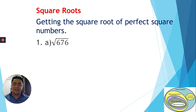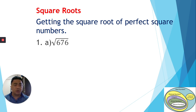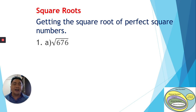Hello, good morning once again, my dear students. Today we're going to study about getting the square roots of perfect square numbers. What is a perfect square number? Examples of perfect square numbers include 4, 9, 16, 25, 36, 49, and so on.